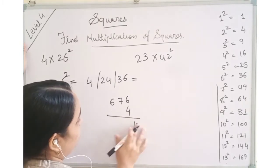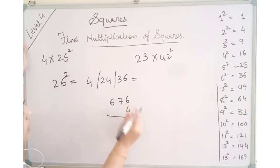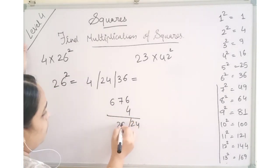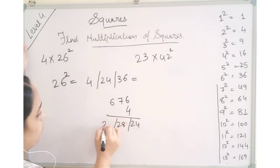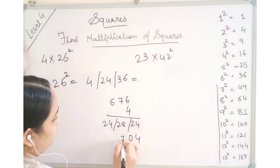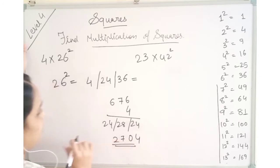You will get the answer. 6 fours are 24 balancing line. 7 fours are 28 balancing line. 6 fours are 24 again. So 2, 0, 3 went here. So 7. This is the answer 2704.